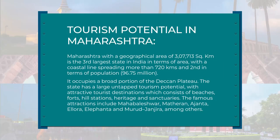Maharashtra has a geographical area of 3,07,713 square kilometers and is the third largest state in India in terms of area, with a coastline of more than 720 kilometers. It is the second most highly populated state and occupies a broad portion of the Deccan Plateau. The state has large untapped tourism potential with beaches, forts, hill stations, heritage, and centuries-old monuments. Famous attractions include Mahabaleshwar, Matheran, Ajanta, Ellora, Elephanta, and Murud-Janjira, among others.